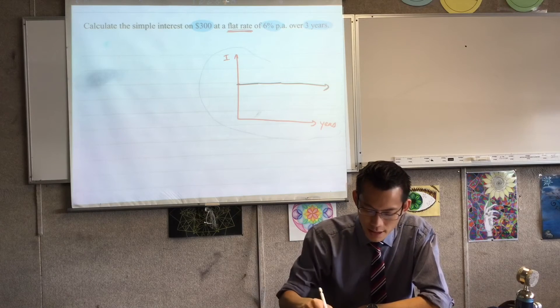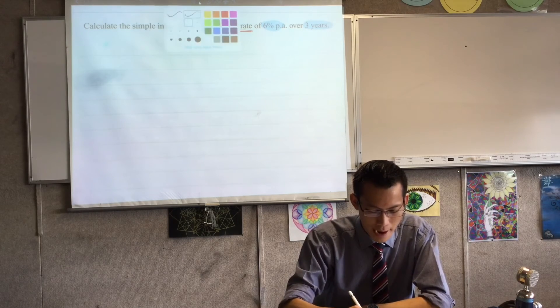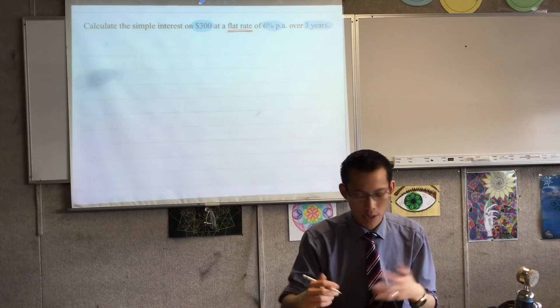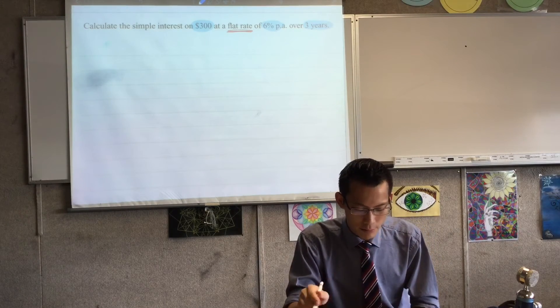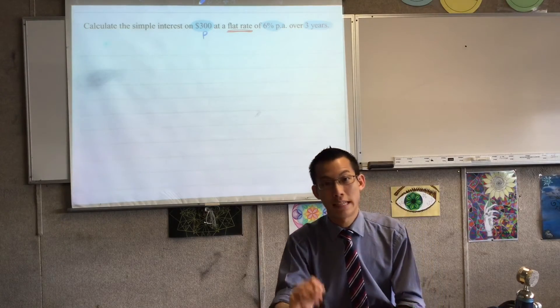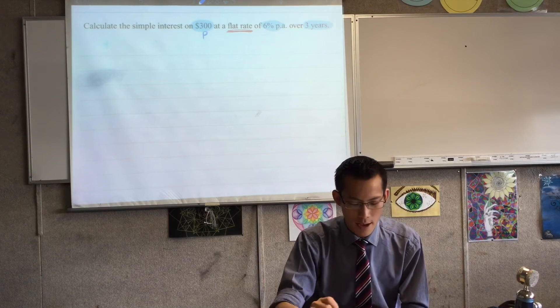When it says calculate the simple interest on $300, that there, that's your principal. That's the starting amount. Okay, the 6% per annum, that is the rate, and three years, that's the number of time periods that I'm interested in.